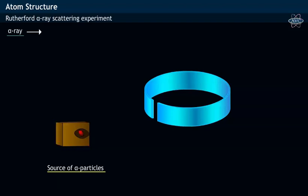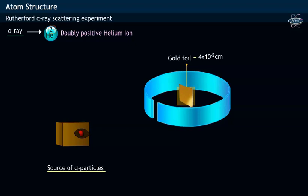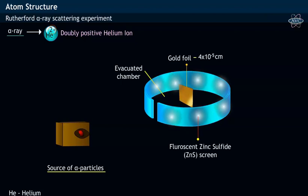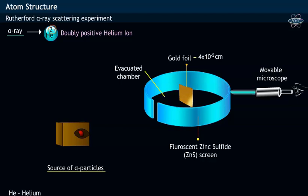Generally, alpha rays consist of doubly positive helium ion or He2+. A thin gold foil of thickness is placed in the center of an evacuated chamber, which is surrounded by a fluorescent screen made of zinc sulphide. A mobile microscope is arranged outside the zinc sulphide screen in order to see the light flashes or scintillations.